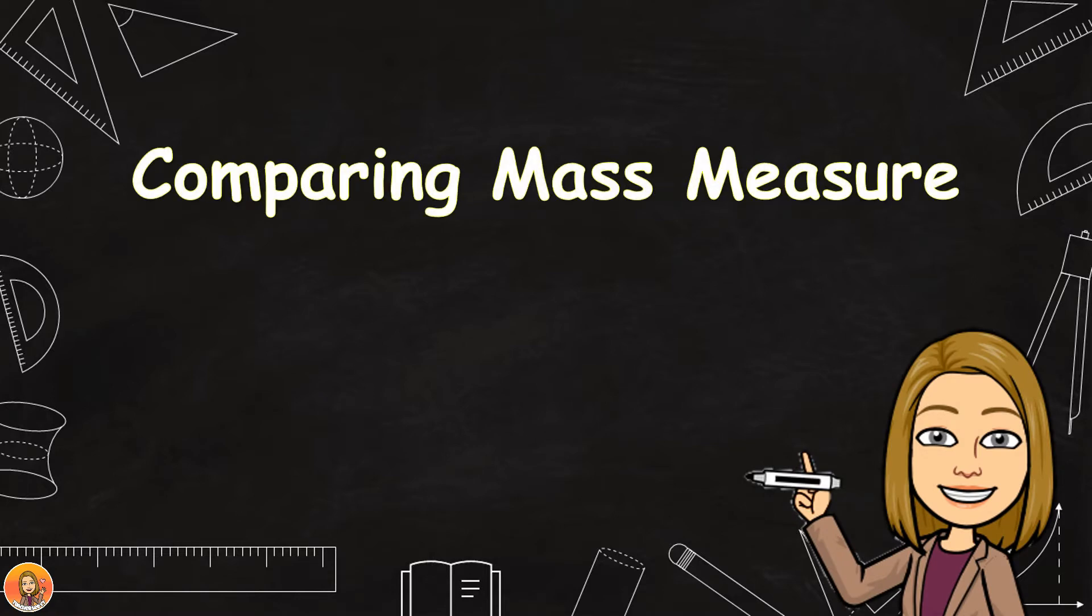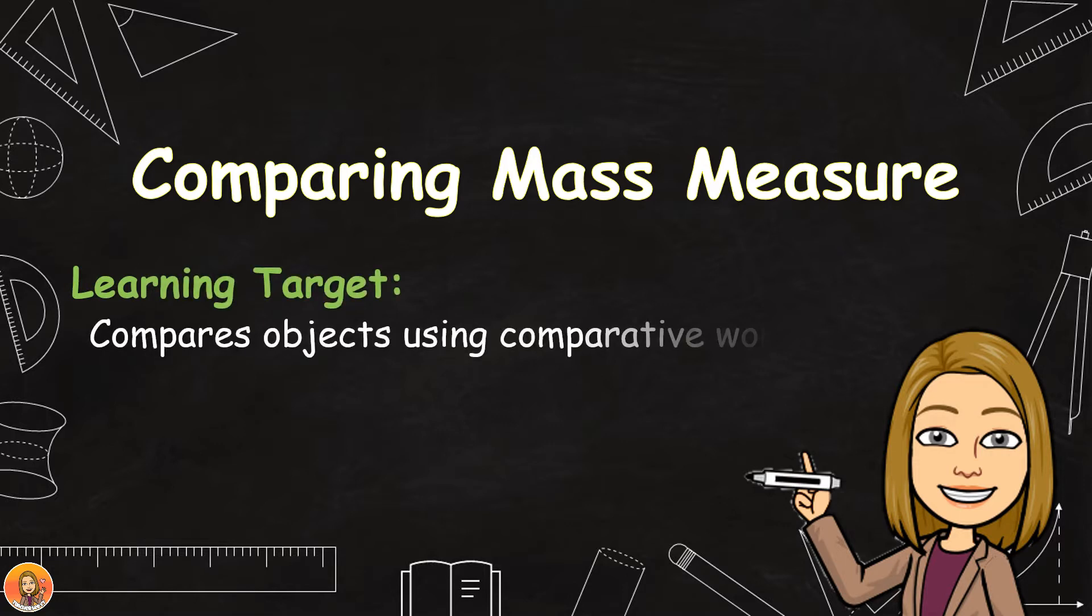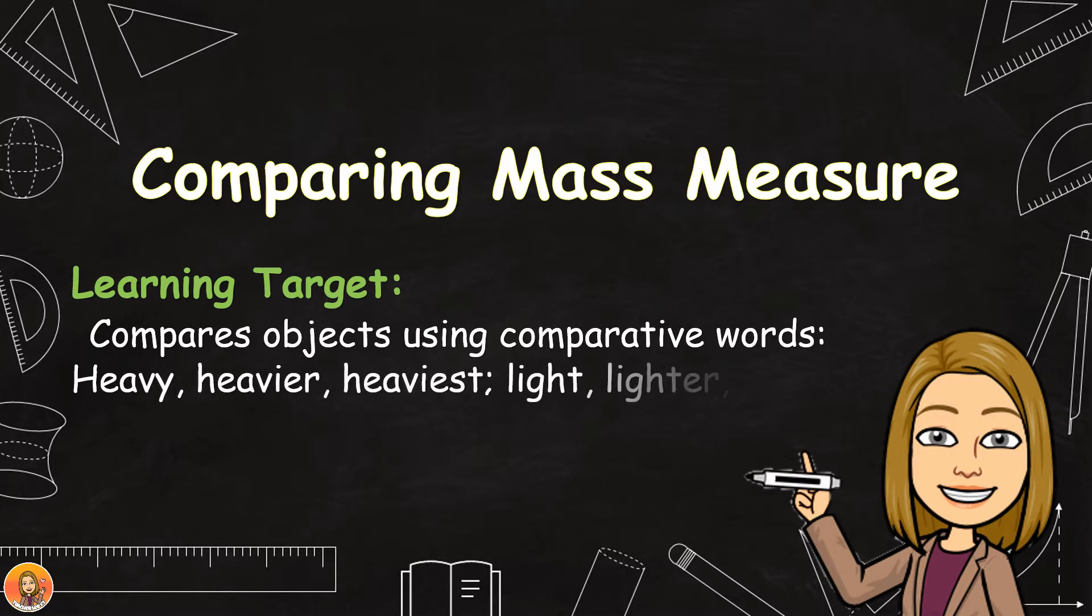Comparing Mass Measure Learning Target: Compares Objects Using Comparative Words - Heavy, Heavier, Heaviest, Light, Lighter, Lightest.